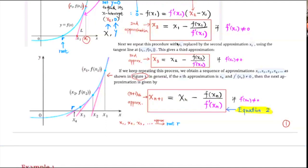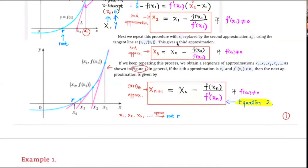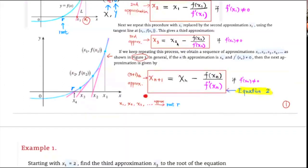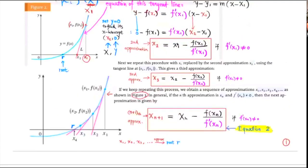If you try to program this, you can write a loop to get a better and better approximation to the root. As we iterate and continue this process, xₙ gets closer and closer to the root. This is the formula for the (n+1)-th approximation using Newton's Method, and we used the picture to illustrate it. This idea works provided that the derivative at xₙ is not 0.